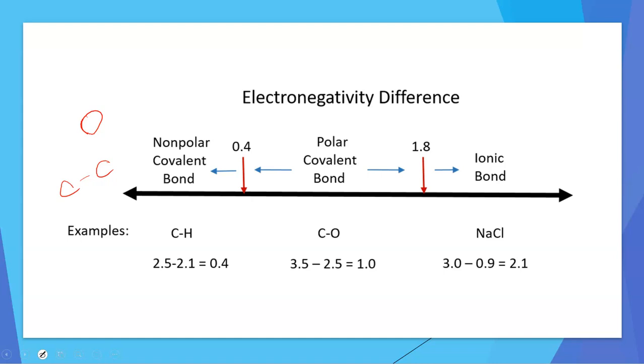On the opposite end of our bonding spectrum would be an electronegativity difference of 3.3, which would be if we had a francium and fluorine bond. That would be completely ionic. The electron involved in the bond would spend all of its time on fluorine and none of its time on francium.